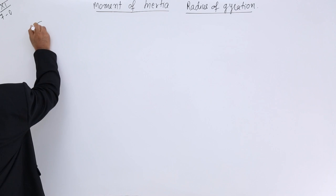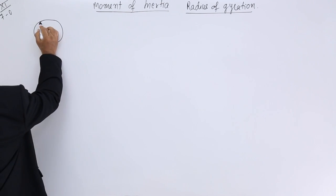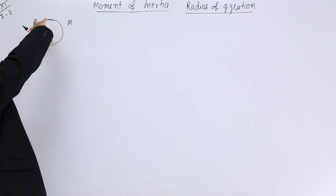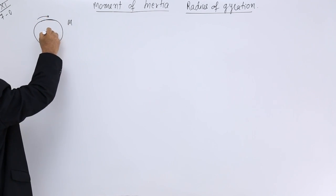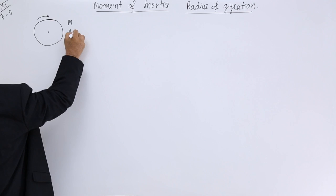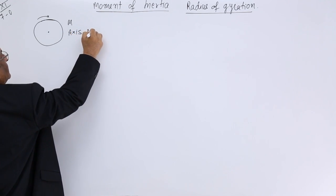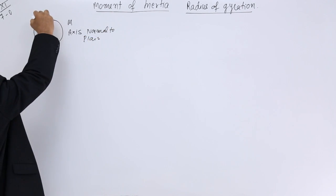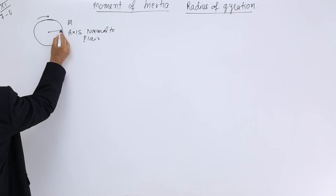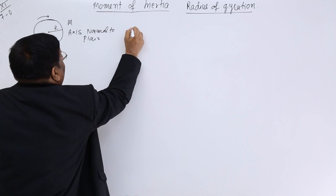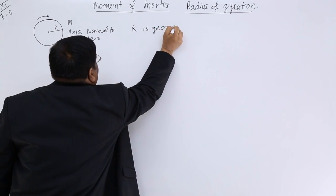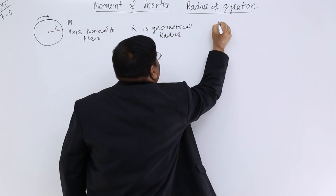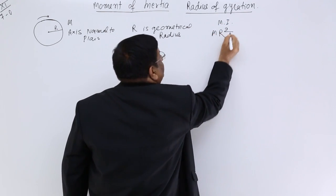If we have a ring with mass m, the axis of rotation is normal to the plane and it is rotating this way. This radius is r — that is the geometrical radius — and we have moment of inertia as mr².